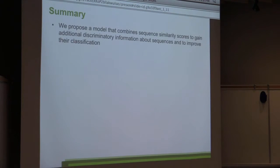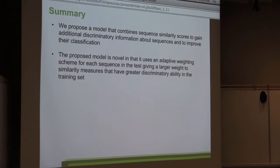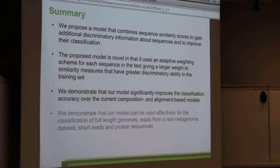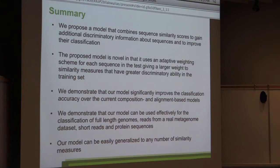So in summary, we proposed a model that combines sequence similarity scores to gain additional discriminatory information about sequences and to improve their classification. The proposed model is novel in that it uses an adaptive weighting scheme for each sequence in a test set and it gives larger weight to similarity measures that have greater discriminatory rating in training set. It improves classification accuracy over the current composition alignment-based methods. It works both on full-length genomes, reads from the real metagenome dataset, short reads and protein sequences. And our model can be generalized to any number of similarity measures that you wish.